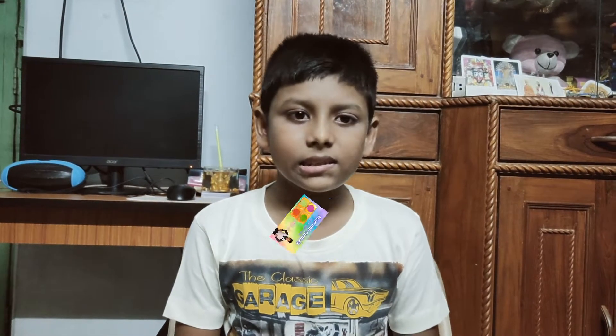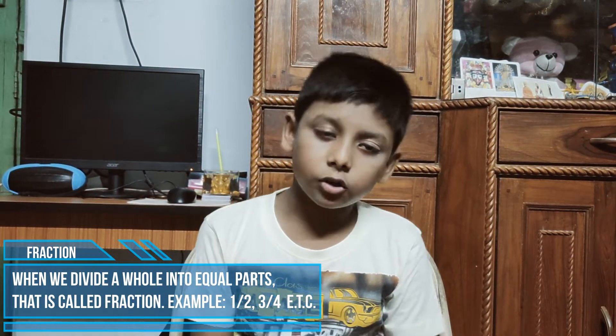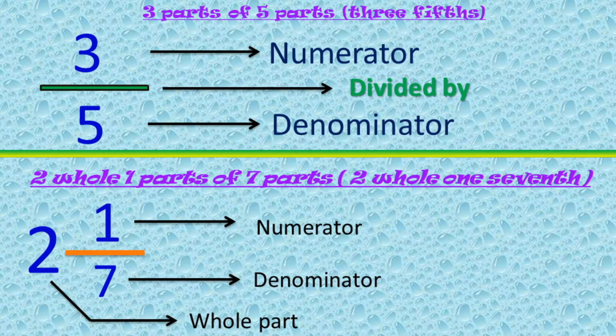For better understanding, let's discuss what is fraction. When we divide a whole into equal parts, that is called fractions. Example 1 by 2 and 3 by 4. Look friends, I have taken a fraction 3 by 5. Here 3 is the numerator, middle one is divided by and 5 is denominator. That means numerator divided by denominator.